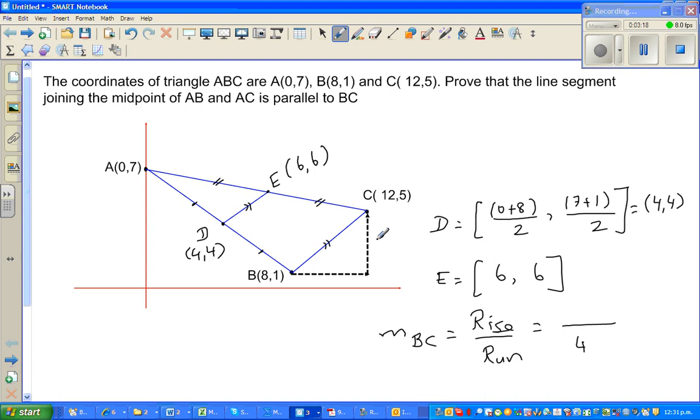Rise is, this is the rise, and this is the run. So when you're looking at run, you're looking at the x-coordinate. You're running from 8 to 12. And you're rising from 1 to 5. So when you rise from 1 to 5, the rise is 4. So the gradient is 1.